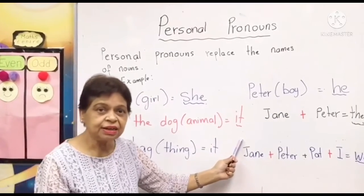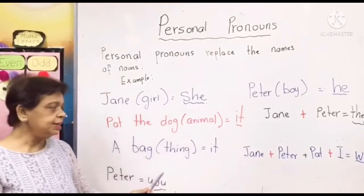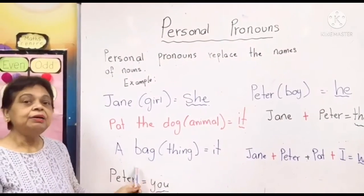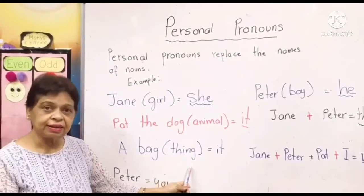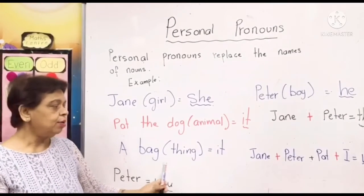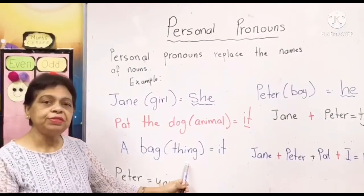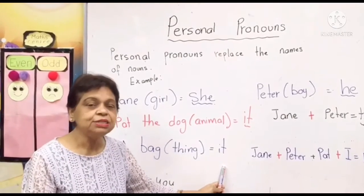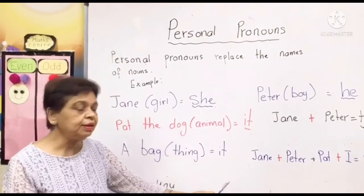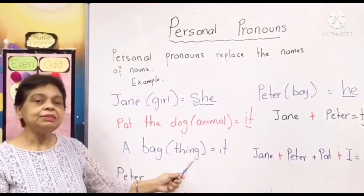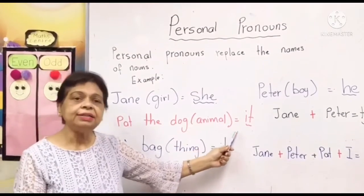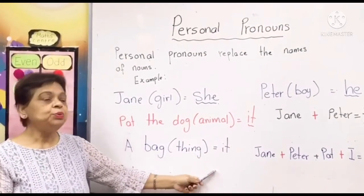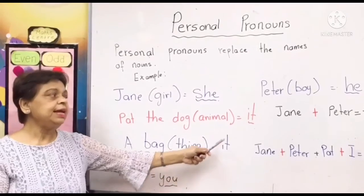It is 'it.' Next, a bag. A bag is a thing. The personal pronoun for thing is also 'it.' So remember — animals and things take the same personal pronoun, which is 'it.'